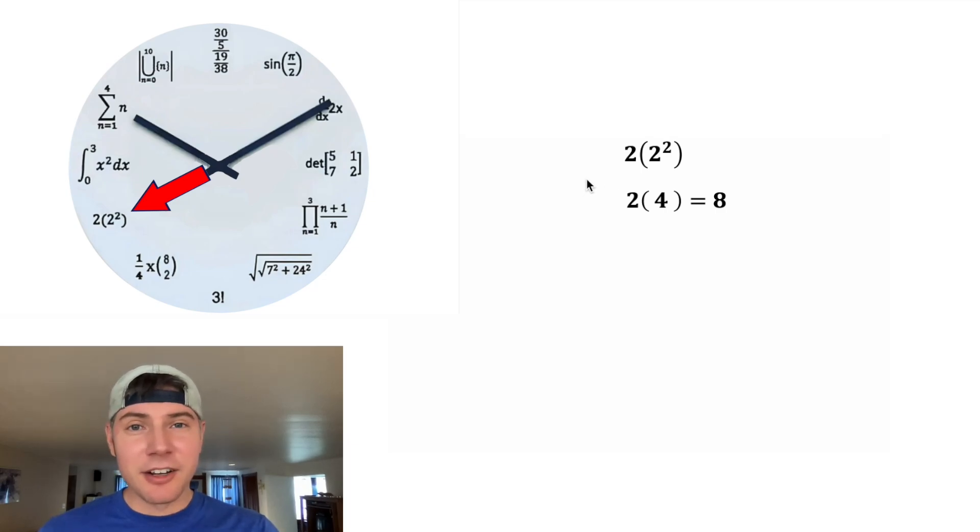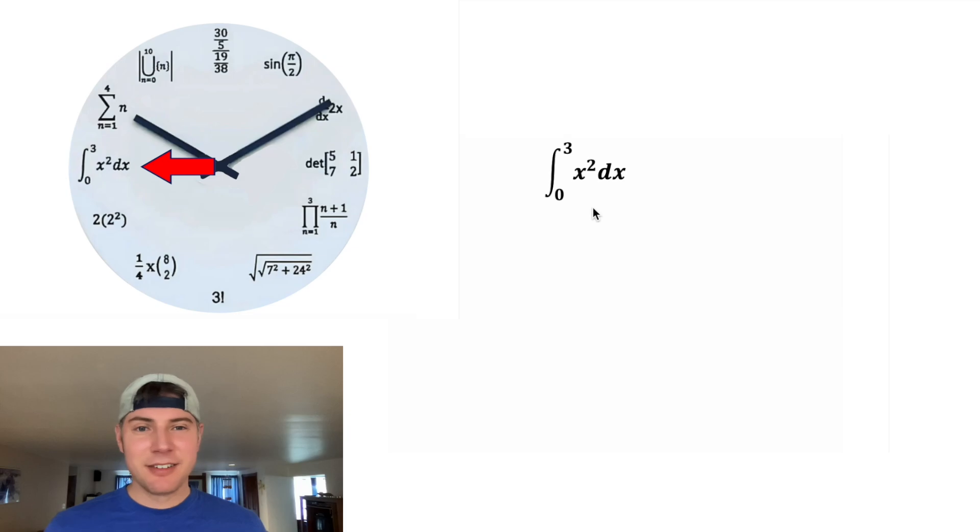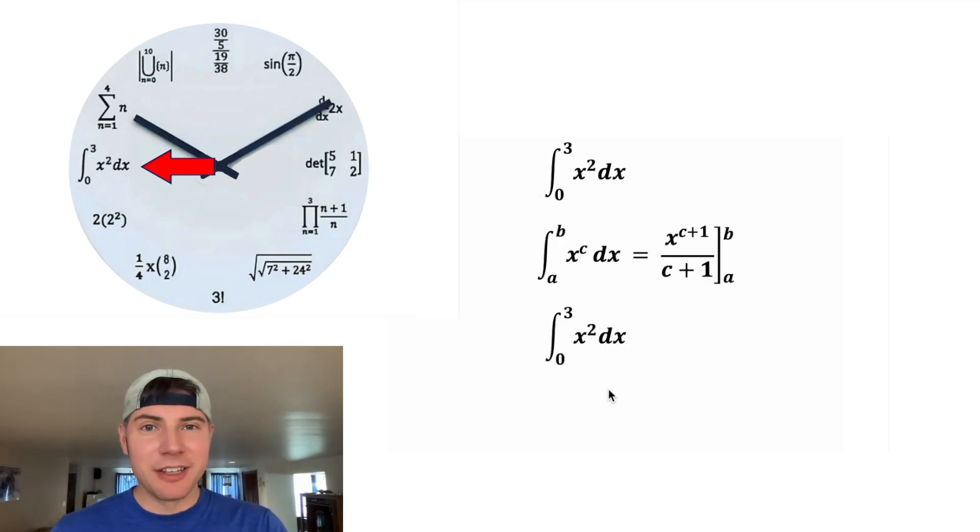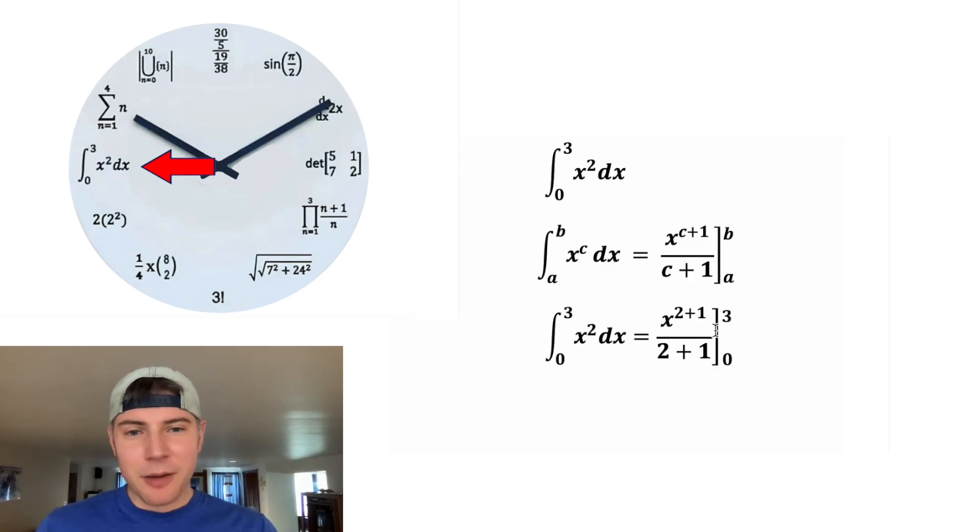Then we have an integral from 0 to 3 of x² dx. Here are the notes for this type of integral, so we can just use the notes to evaluate this. We know we're going to have some sort of fraction, and this says x^(c+1). Well, c is 2, so this is going to be x^(2+1), and c+1 would end up being 2+1. And then for this, we can see that the b is this top number, so we're going to put a 3 there, and the a is going to be 0.